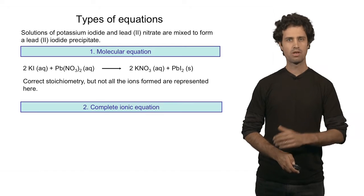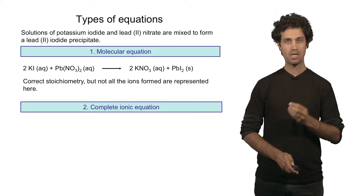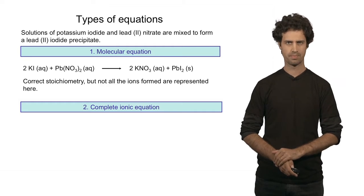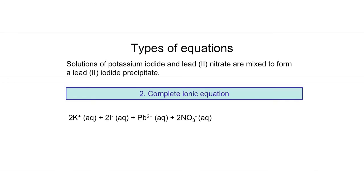In the complete ionic equation we actually show explicitly all the ions that are present in the solution. For this particular reaction we find potassium ions, iodide ions, lead 2 plus ions, and nitrate anions. Note that we have two nitrate anions for each one lead 2 plus.